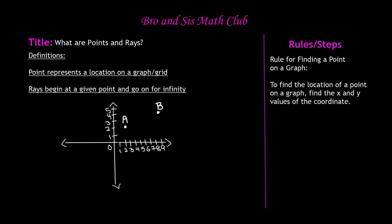First we need to find the x and y axis. Remember this: the x axis is the horizontal line, so this over here is going to be our x axis. And the line that goes long ways, or vertical, is our y axis. So now we want to find our coordinates for the x and y axis. First we need to see what is the value of point A for the x axis. For point A, it goes two places to the right on the x axis, and then it goes two places up for the y axis.